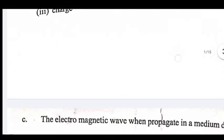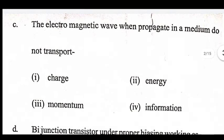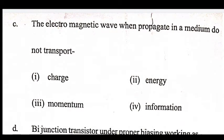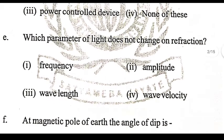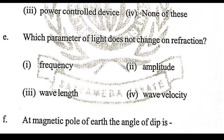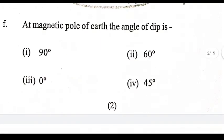Electromagnetic waves when propagating in a medium do not transfer — what do they not transport? Energy? Charge? Momentum? Next question: a PN junction transistor under proper biasing is working as — what? When does the parameter of light not change on refraction?